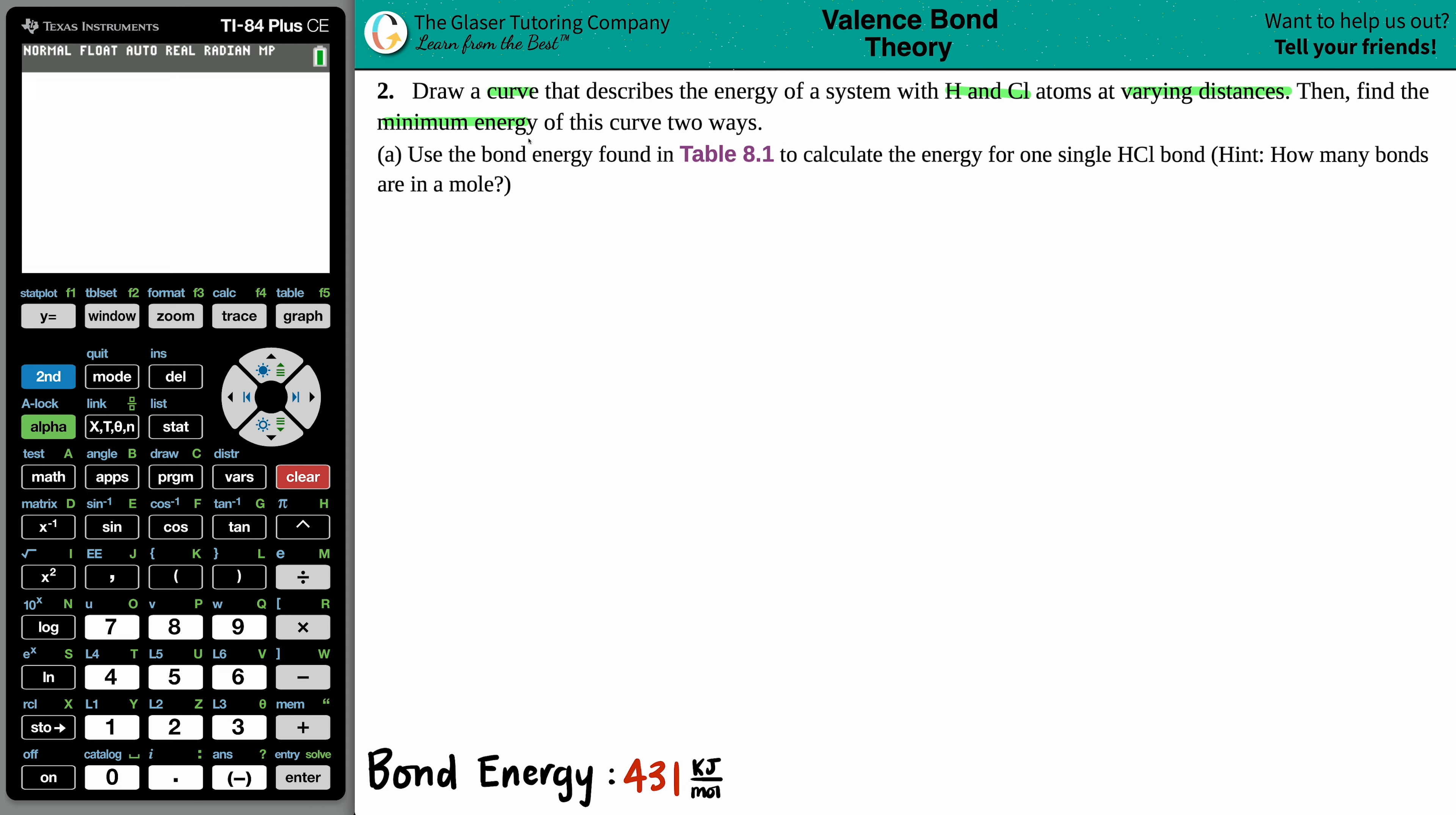So the first way, letter A, is we're going to use the bond energy found in table 8.1 to calculate the energy for one single HCl bond. Hint, how many bonds are in a mole?